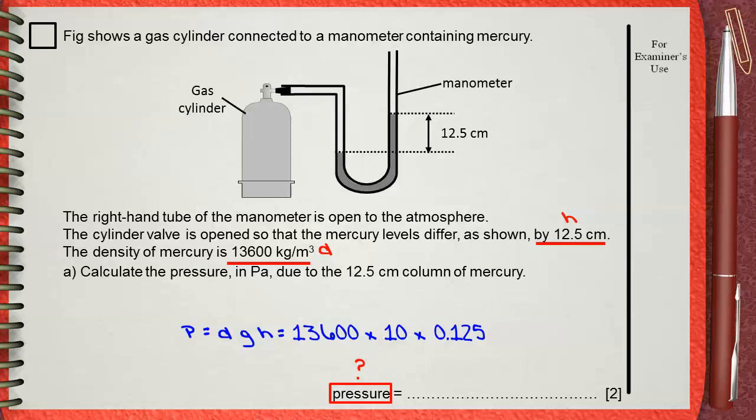Now what about H? H will be 0.125. But why 0.125?